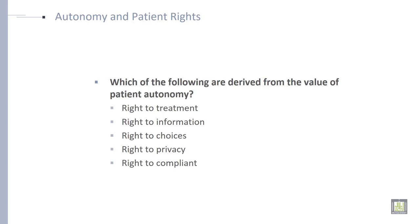Regarding autonomy and patient rights — which of the following are derived from the value of patient autonomy? The rights derived are: right to treatment, right to information, right to choice, right to privacy, and right to complaint.